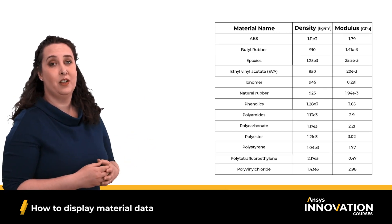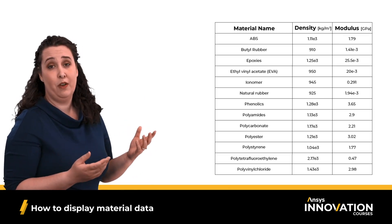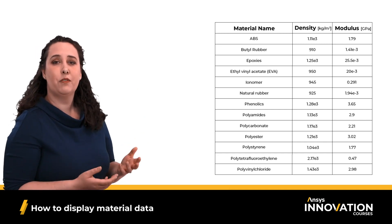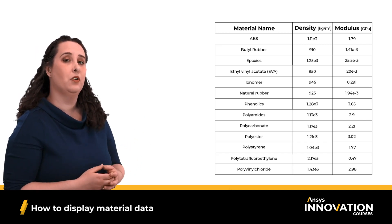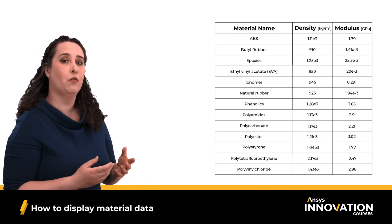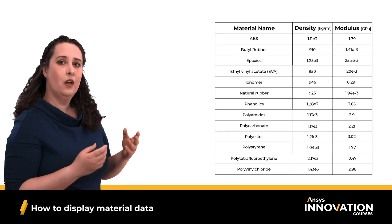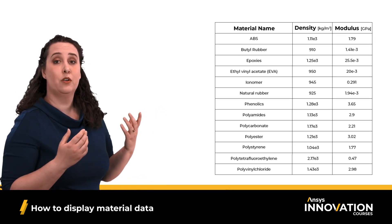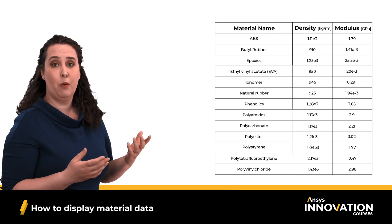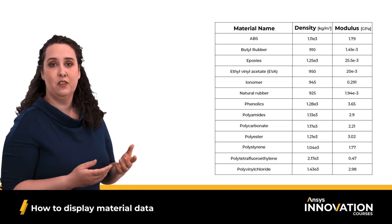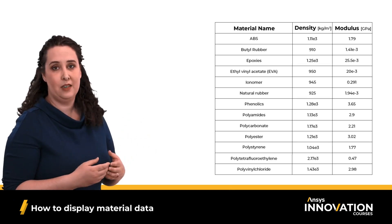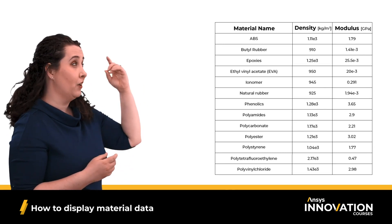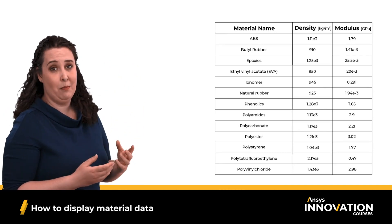Also, the data is usually presented by material family, such as polymers shown here. This can be frustrating if I'm considering multiple material families for my design. What if I want to know which of these materials has the highest combination of properties, like specific stiffness, which is Young's modulus divided by density? I'm going to have to calculate that ratio for every single value in this table.